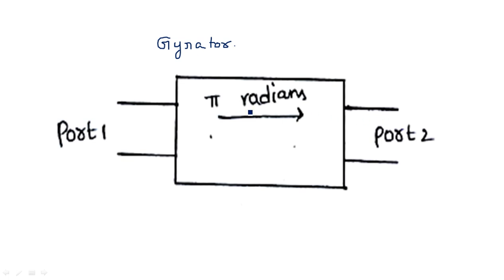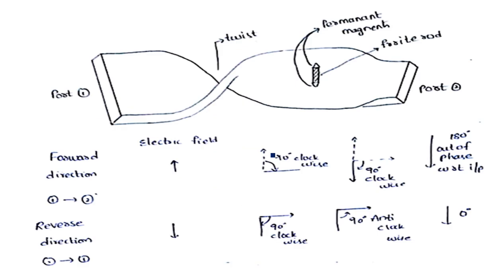It provides 180 degrees phase shift when the signal is going from port 1 to port 2, and when the signal is going in the backward direction there is no phase shift — that is 0 degrees. Now coming to the waveguide of this gyrator, how the waveguide actually looks.